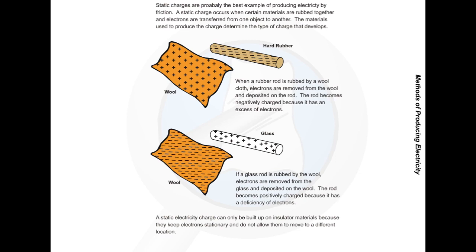If a glass rod is rubbed by the wool, electrons are removed from the glass and deposited on the wool. The rod becomes positively charged because it has a deficiency of electrons. A static electricity charge can only be built up on insulator materials because they keep electrons stationary and do not allow them to move to a different location.